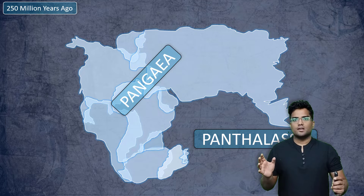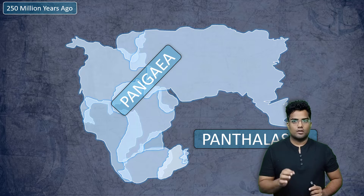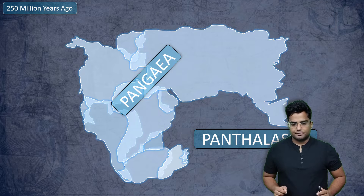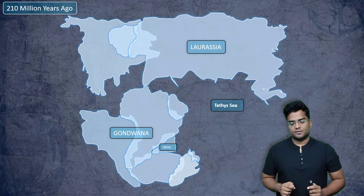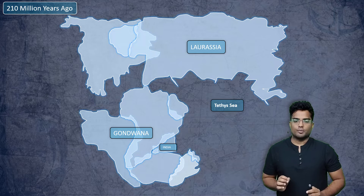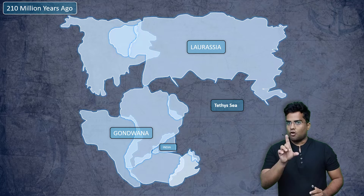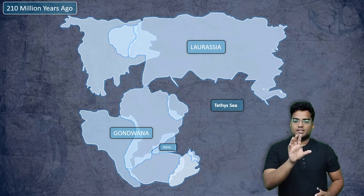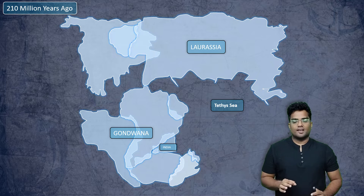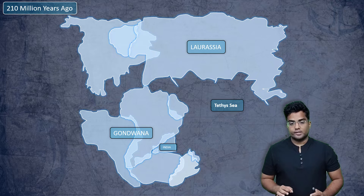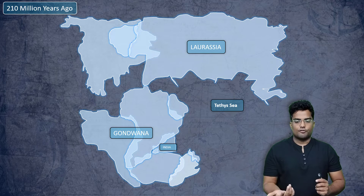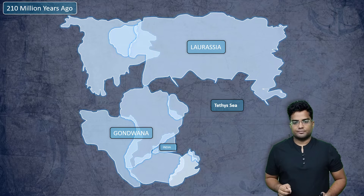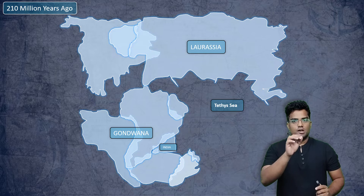Pangaea is essentially a giant mix of all the continents we know of, and Panthalassa is basically the big ocean. Now what happens is around 210 million years ago, this pretty much broke up. You now have visible parts of North America, and parts of the whole Asia, Europe, and Russia — that is known as Laurasia. And you have parts of South America, Africa, pretty much sticking with each other, and there is a small part of India also. The most important thing is you can see the Tethys Sea between Laurasia and Gondwana. Gondwana is essentially the mix of Africa, South America, India, Australia and all those. So that's where the Tethys Sea is sandwiched between Laurasia and Gondwana.